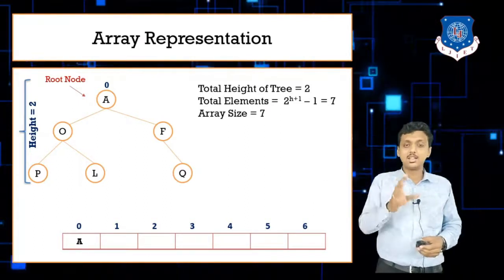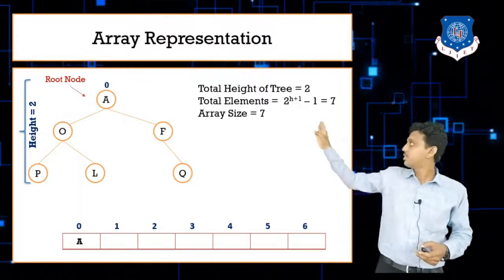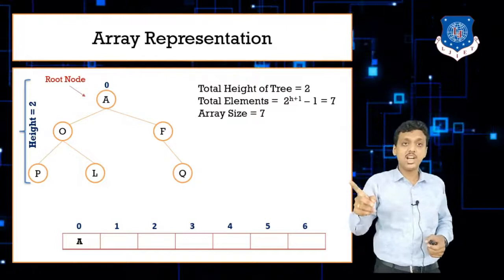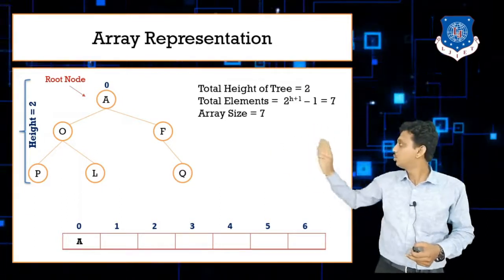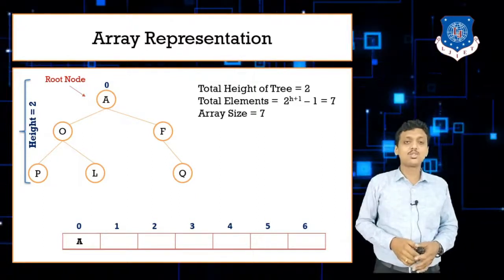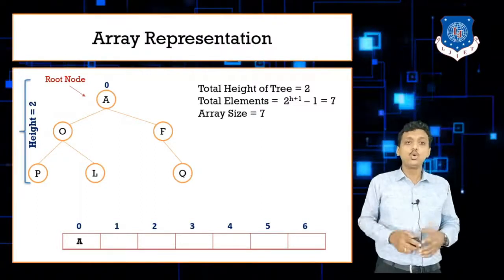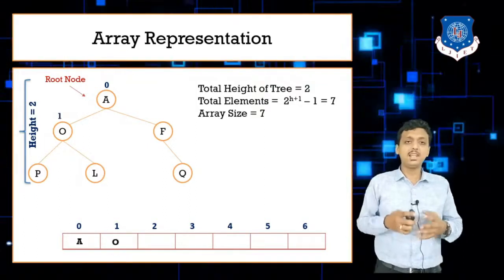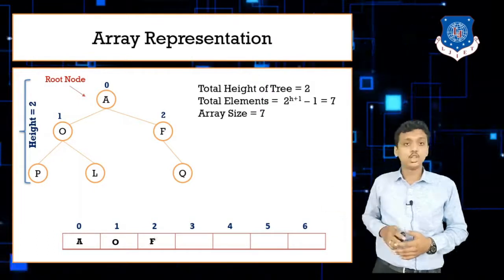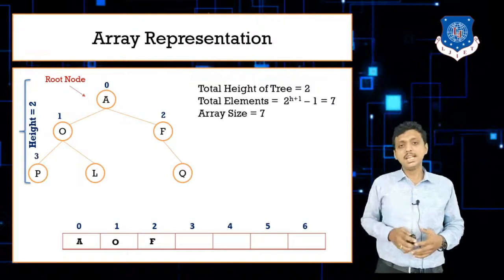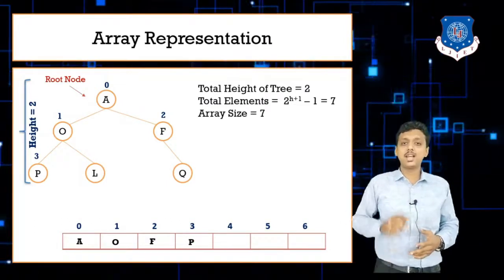With root at index 0, the left child goes at index 1 and the right child at index 2, then continuing the sequence 0, 1, 2, 3, 4, 5, 6. So O goes at index 1, F at index 2, P at index 3, and L at index 4.